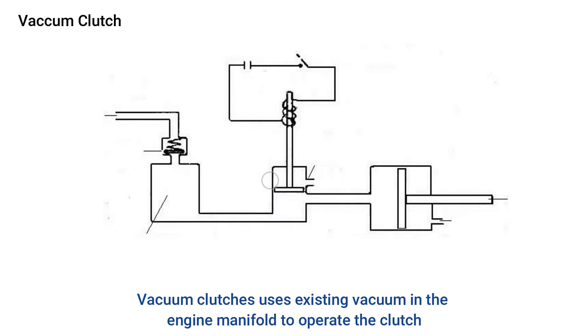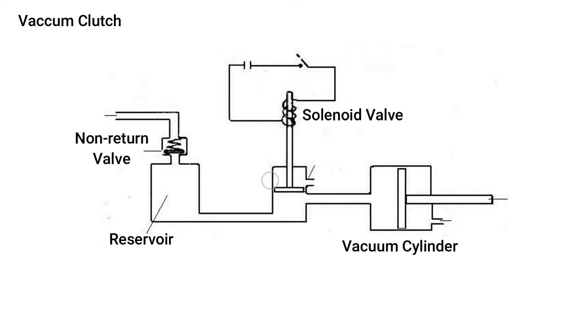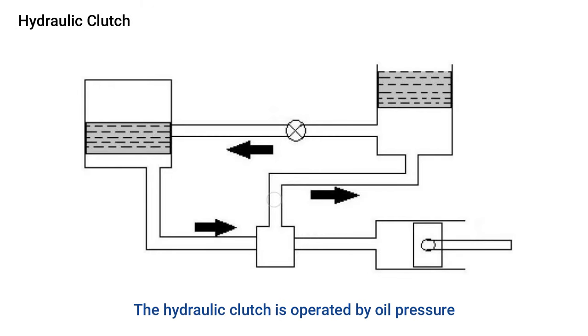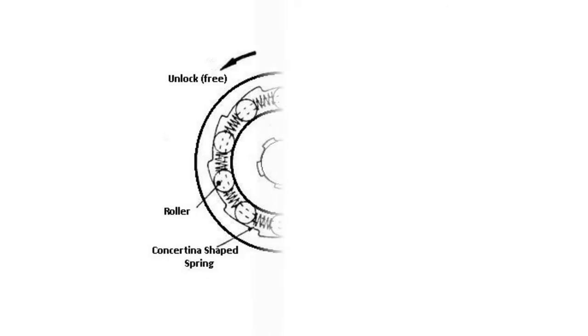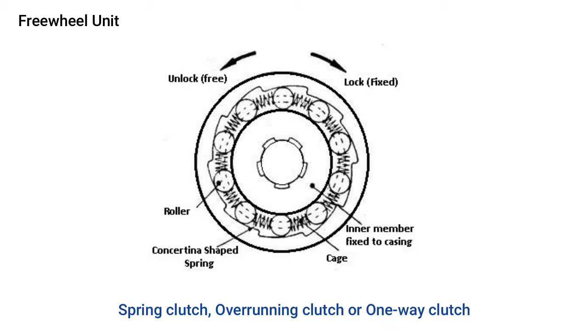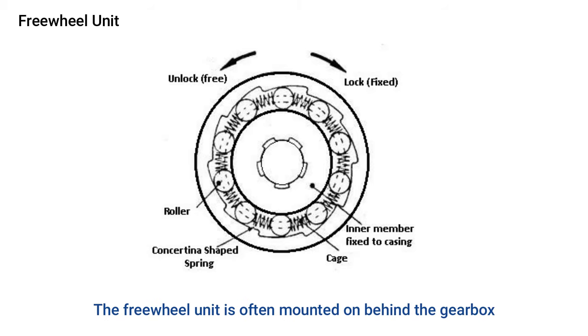The vacuum clutch uses existing vacuum in the engine manifold to operate the clutch. It consists of a reservoir, non-return valve, vacuum cylinder with piston, and solenoid valve. The hydraulic clutch is operated by oil pressure and has fewer parts than other clutches, consisting of an accumulator, control valve, cylinder with piston, pump, and a reservoir. The freewheel unit, also known as a spring clutch, overrunning clutch, or one-way clutch, is an important part of every overdrive. It transmits power in one direction only, similar to bicycles, and is often mounted behind the gearbox.